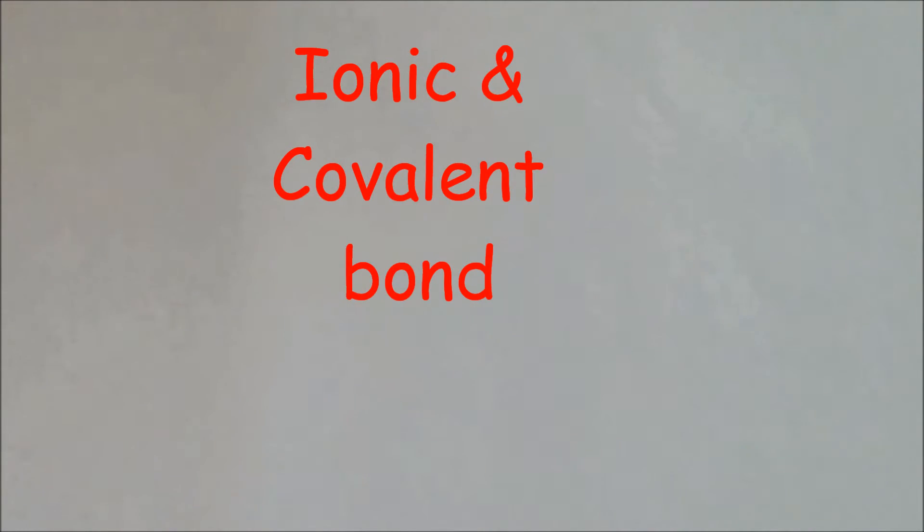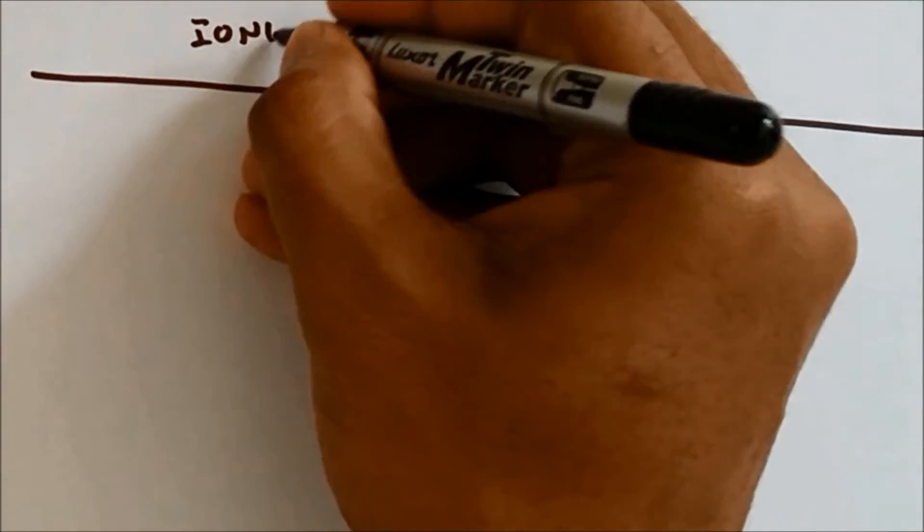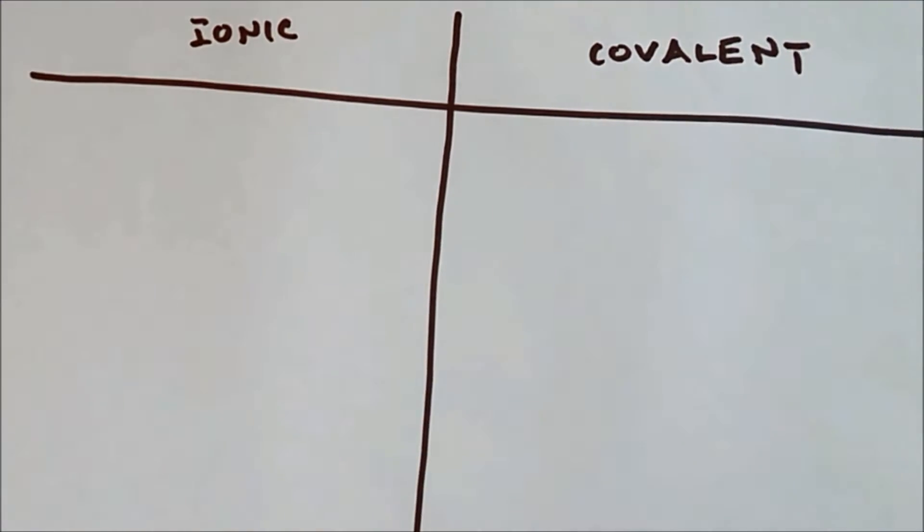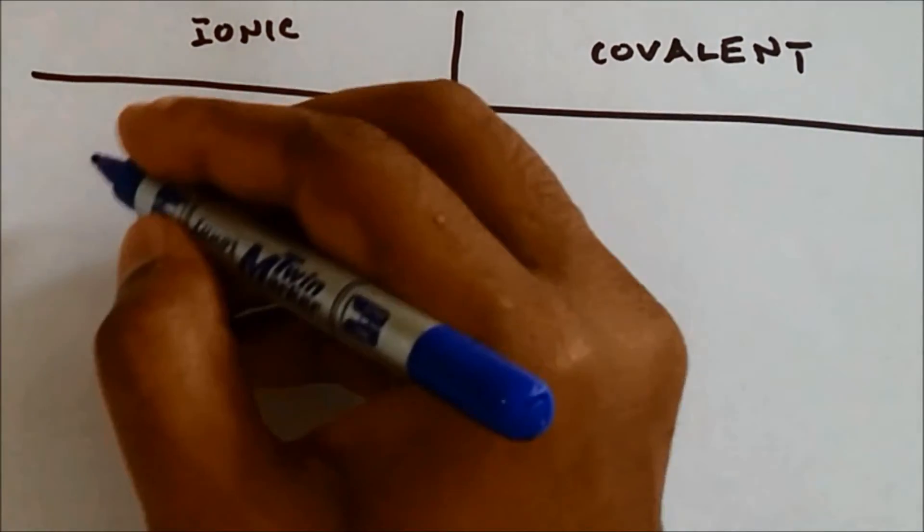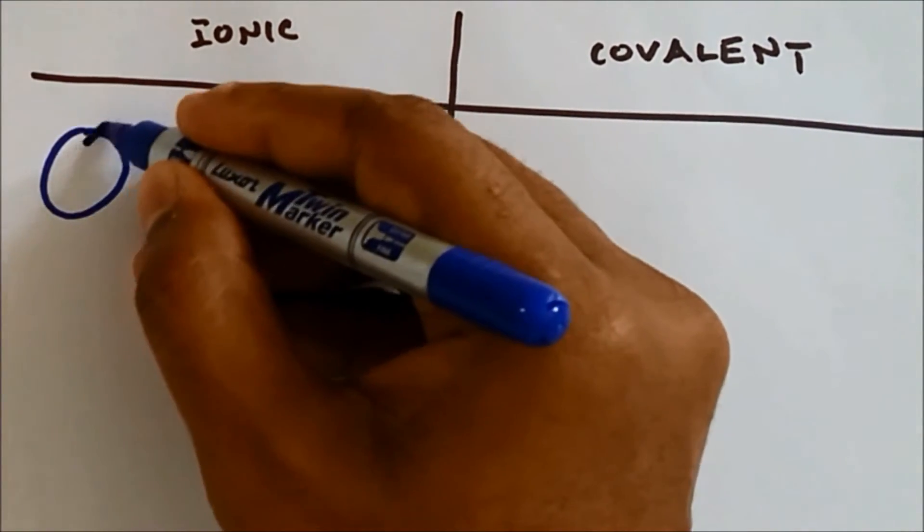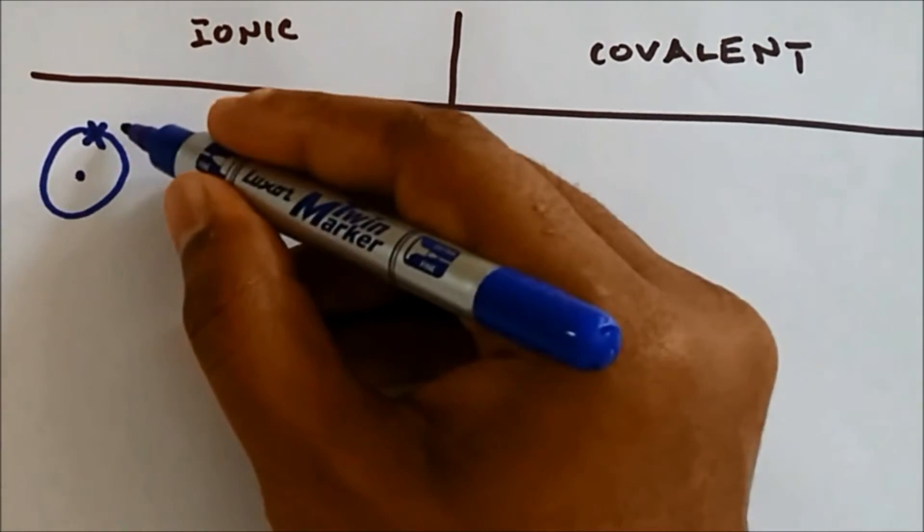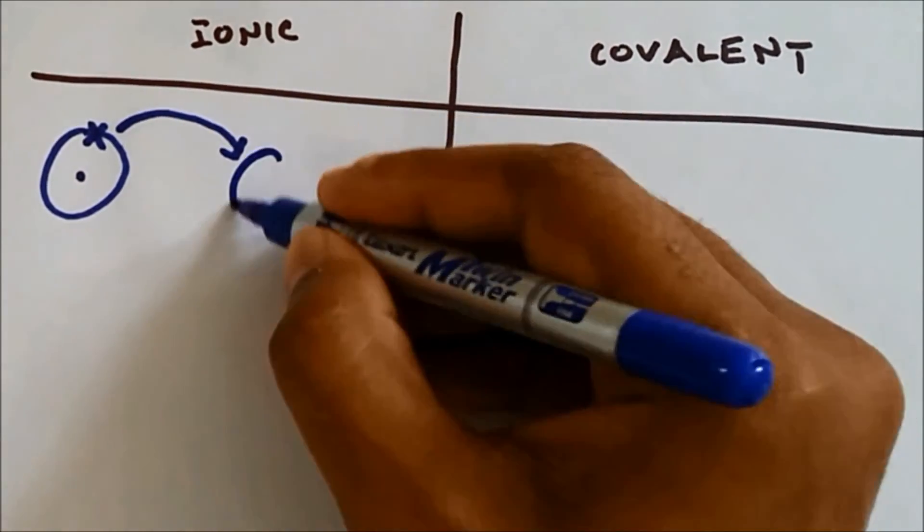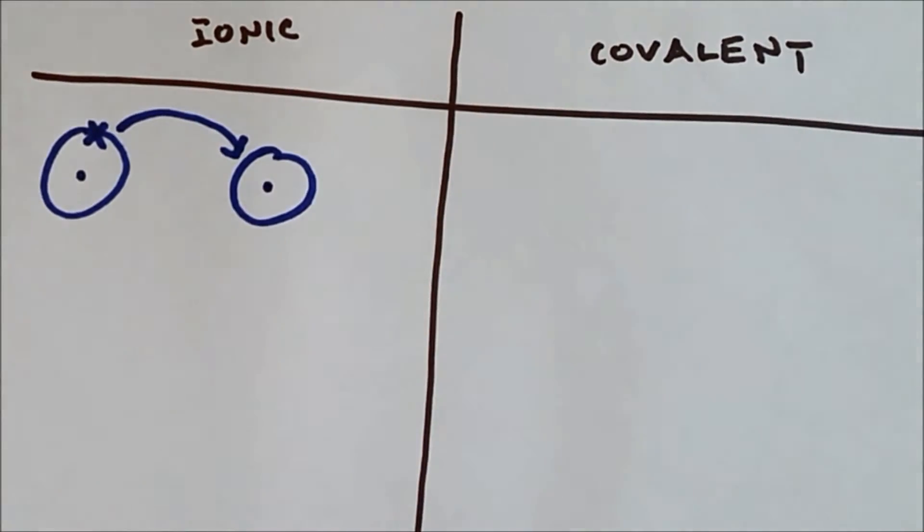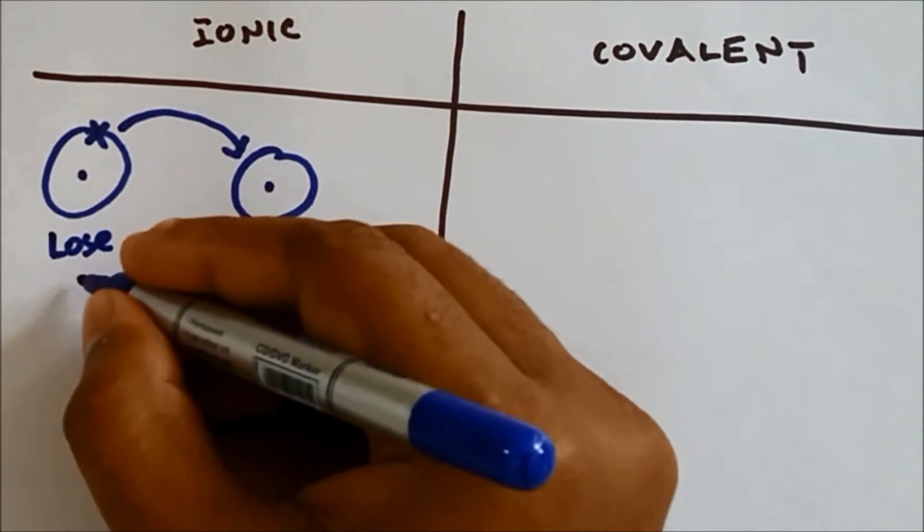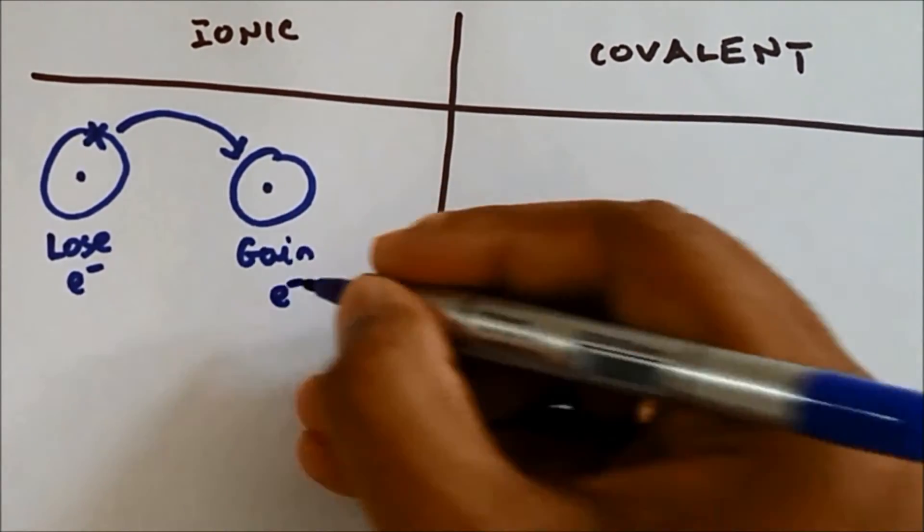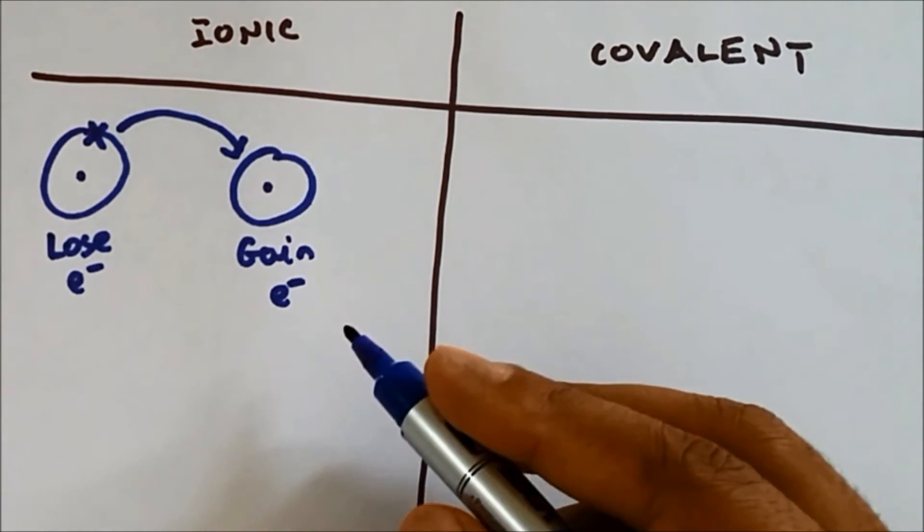Okay, let's compare ionic and covalent bond. In ionic bond one atom will lose an electron and the other atoms will gain electrons. So there is transferring of electrons.